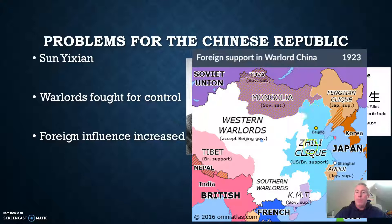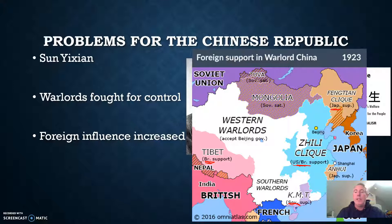You can see on the map this blue shaded region — that was the only equivalent of a centralized government. You can see U.S.-British support, Japanese involvement up north, Soviet support, and British support over here. It wasn't just the western nations that were involved. The Japanese were getting increasingly involved as well.